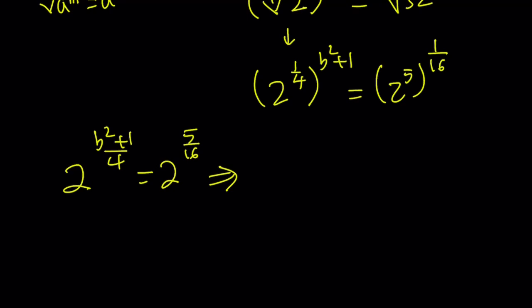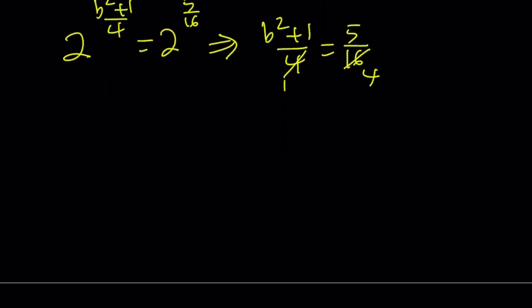The bases are equal, so the exponents are also equal. From here, we get the following equality: b squared plus 1 over 4 equals 5 over 16. You can kind of cross-multiply, I mean cross-cancel here, 1 and 4, and then cross-multiply next. 4b squared plus 4 equals 5. And then this should give you 4b squared equals 1.